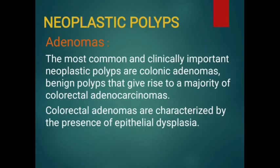We have now finished discussing non-neoplastic polyps — inflammatory, hamartomatous, and hyperplastic. We will start with neoplastic polyps, called adenoma, the most common and clinically important. Adenoma is a benign polyp in itself but has a high potential to give rise to a majority of colorectal adenocarcinomas. The most important feature in colorectal adenoma is the presence of epithelial dysplasia — abnormal development of cells within tissue. Polyps that are only mildly abnormal are said to have low-grade dysplasia, while those that look more like cancer are said to have high-grade dysplasia.